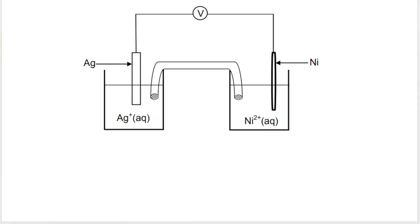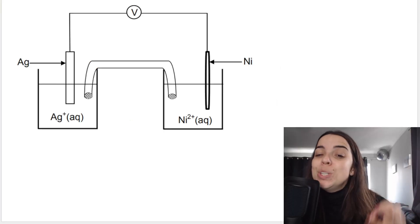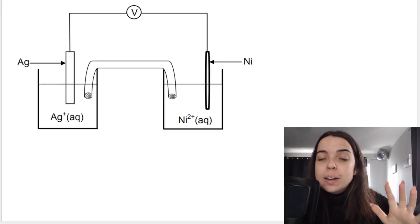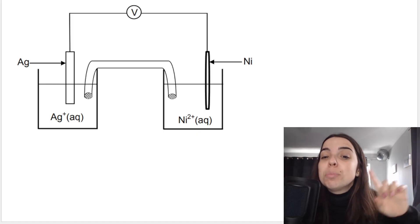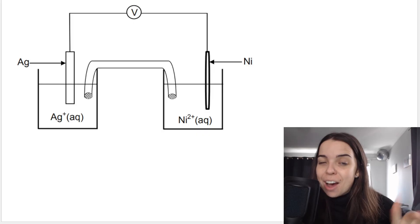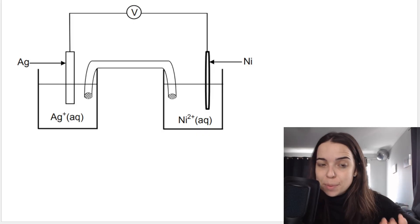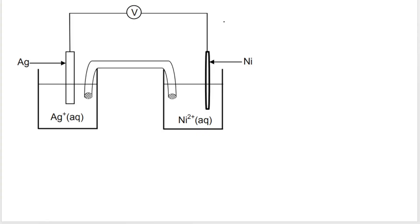Now I want you to try and get the net or overall cell reaction for a silver-nickel galvanic cell. Your first step is to use Table 4B to find out what is being oxidized and what is being reduced. I covered this in a previous video in this playlist, so check that out if you don't know how to use the table. In this case, nickel is being oxidized, so this is the anode half cell, and silver is the cathode half cell.